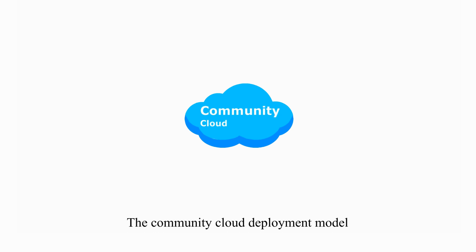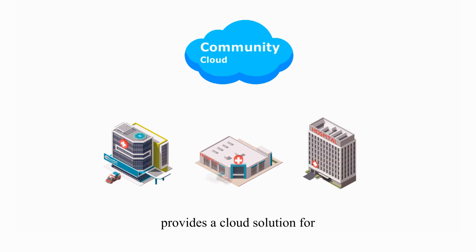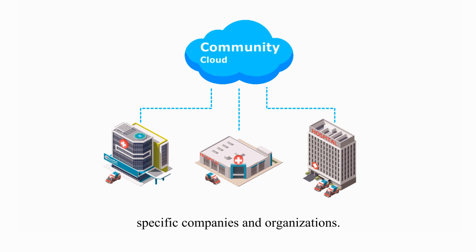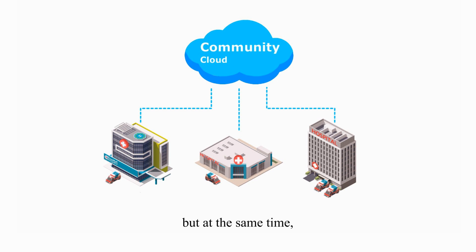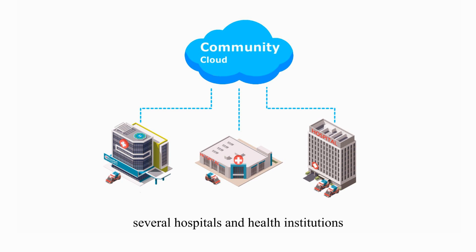The community cloud deployment model is a variation on the private cloud model that provides a cloud solution for specific companies and organizations. The model is not open to the general public, but at the same time is not just for a single organization or company. This model works well for organizations or companies with similar concerns, regulations, or functions. For example, several hospitals and health institutions could use and share a community cloud.